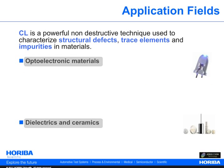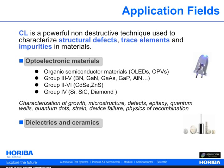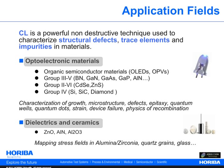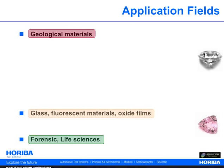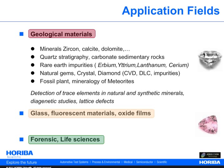Cathodoluminescence is a non-destructive and powerful technique for studying structural defects, trace elements, and impurities of semiconductors, optoelectronics, dielectrics, and ceramics samples. Cathodoluminescence techniques have been widely used for many years in geology and mineralogy applications. Examples include the detection of trace elements in natural and synthetic minerals, diagenetic studies, and lattice defects. Cathodoluminescence is also used to investigate glass, fluorescent materials, and oxide films.